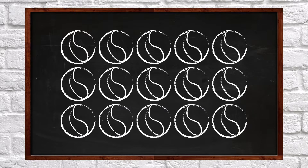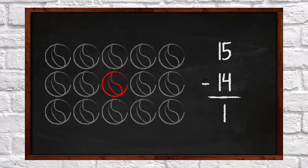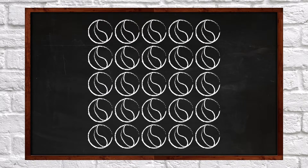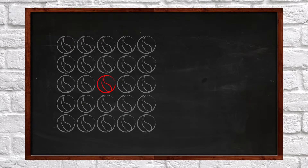What if I have fifteen marbles? If I subtract fourteen marbles, then I have one marble left. Fifteen minus fourteen equals one. If I have twenty-five marbles and I subtract twenty-four marbles, then I have one marble left. Twenty-five minus twenty-four equals one.